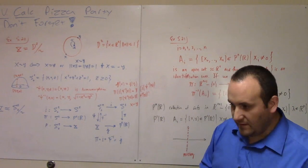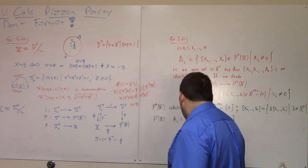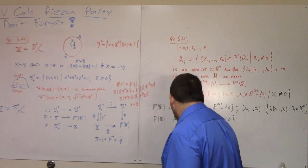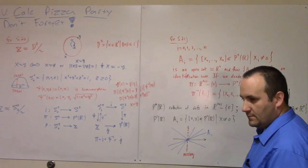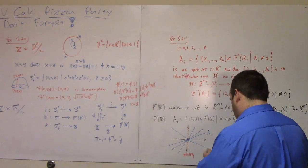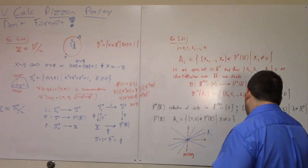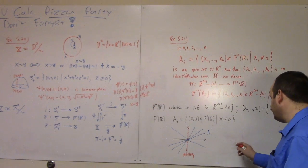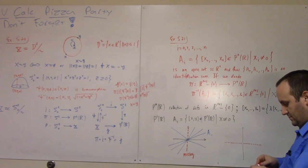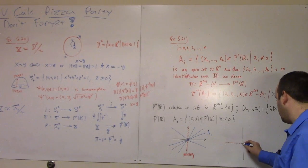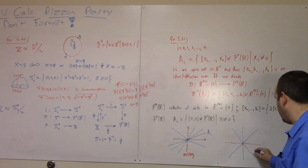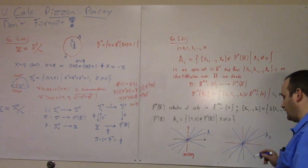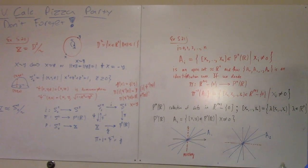But every single other projective line, all of those are in there. Whereas, if you look at A2, you know what's going to happen. It's going to be missing the x-axis. But then you've got all other projective lines through the origin. That's A2. Their union is everything.